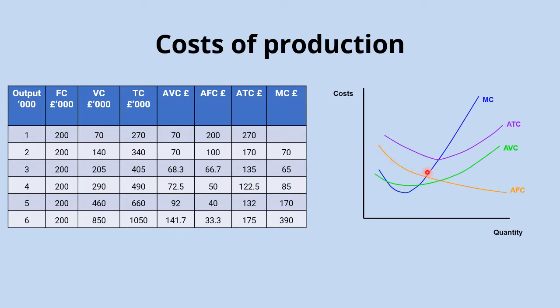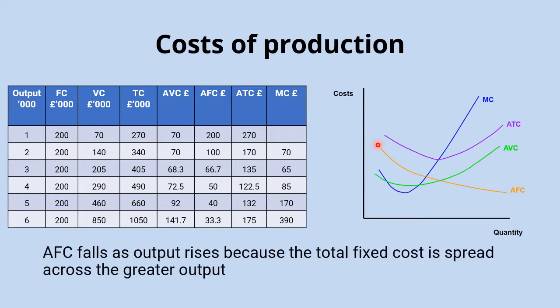Starting with the average fixed cost curve, shown here in orange, you can see that it takes a downward sloping shape. That is because as output rises, the total fixed cost is spread over a greater amount of output. The calculation is fixed cost divided by output, so it will be very high at low levels of output, and as output increases the average fixed cost comes down — at first very rapidly and then more gradually.